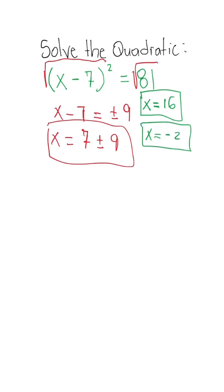Another way that we could do this is we could expand a binomial. So when we expand a binomial, what we're going to have is x squared minus 14x plus 49 is equal to 81.